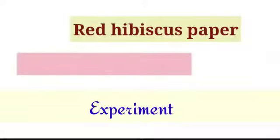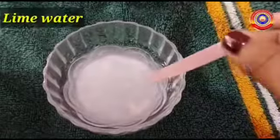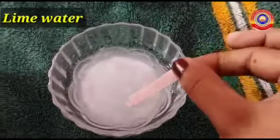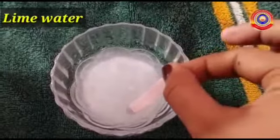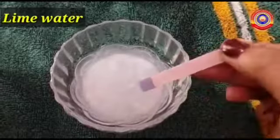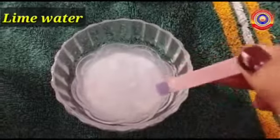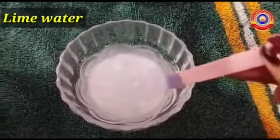First one: lime water. When we dip red hibiscus paper in lime water, it turned to blue color.